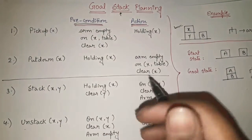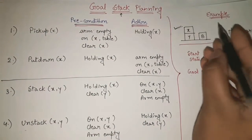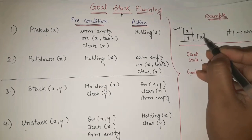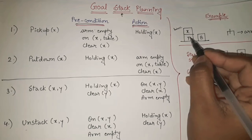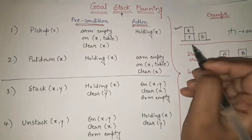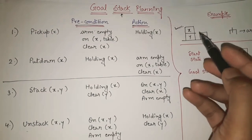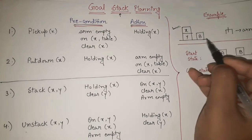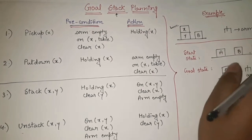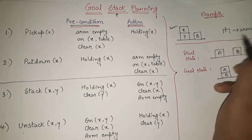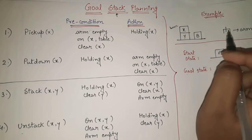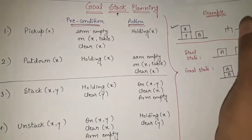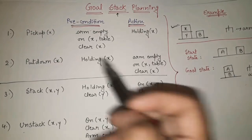Let's understand these four functions with the help of a figure. There is a table. On the table, block B is placed directly. On the other side, block Y is on the table and block X is on top of Y. Apart from the blocks, there is one arm. This arm is used to pick up or put down any block.